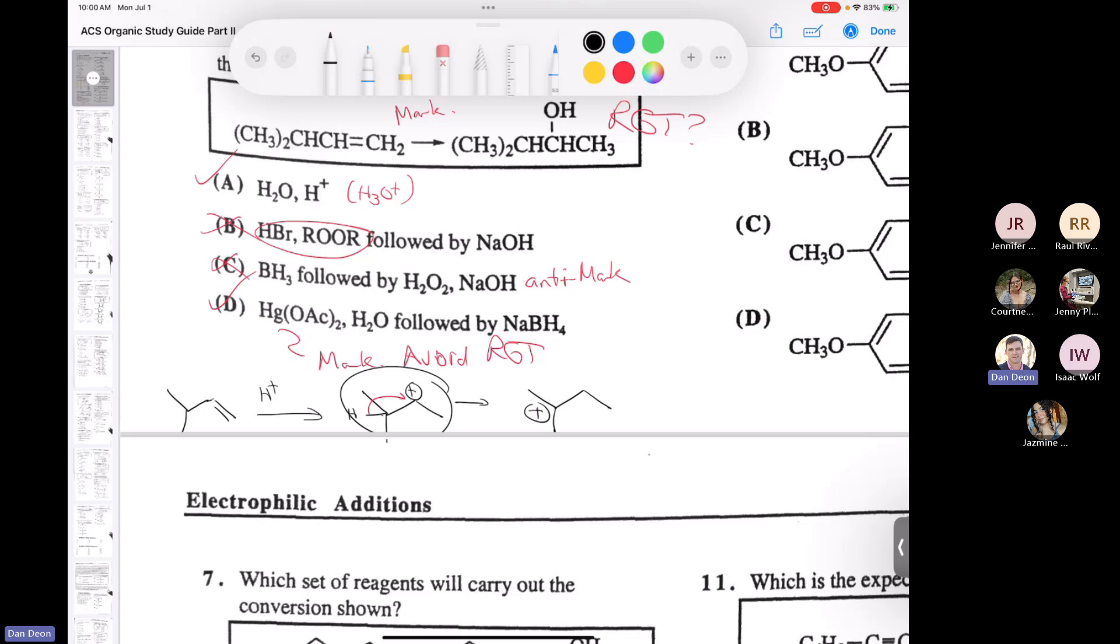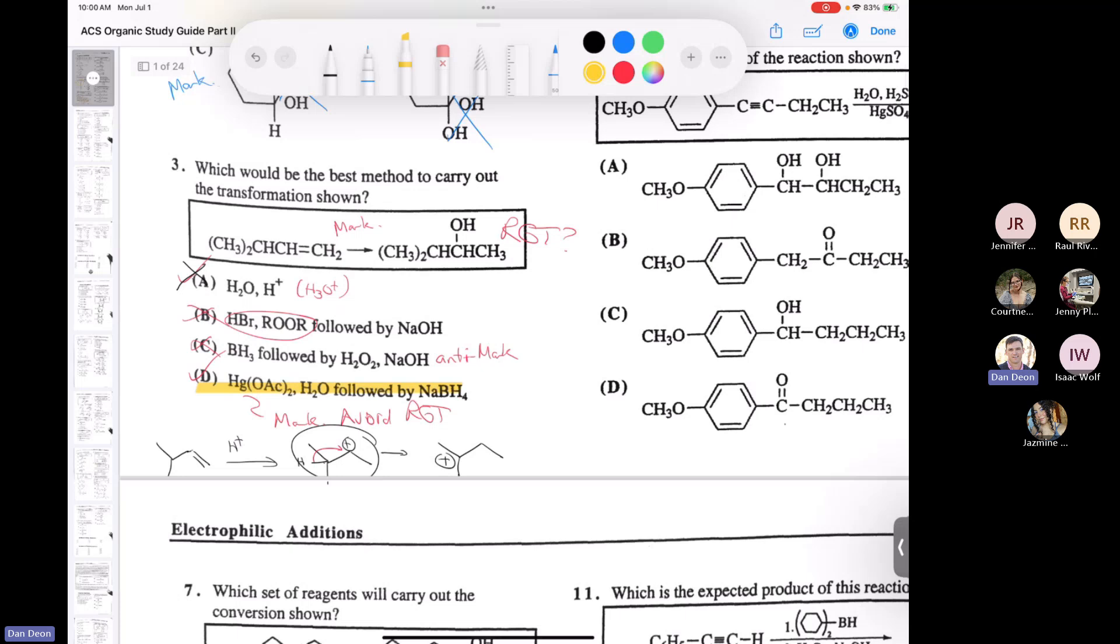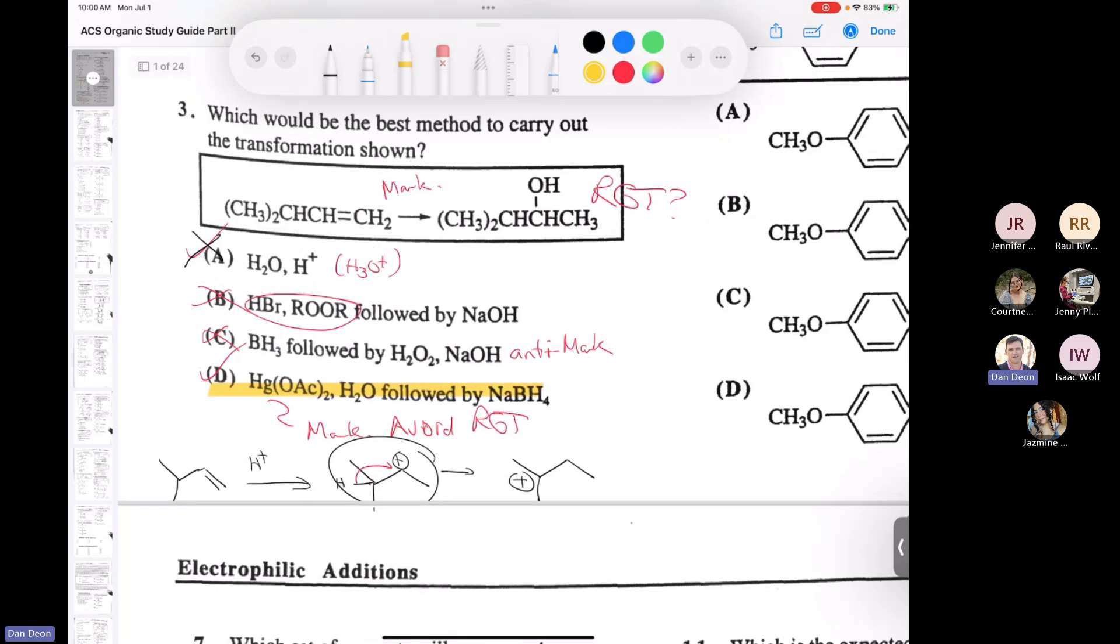It's going to undergo a rearrangement to give us this carbocation. And so we can cross this one off because we need to avoid the carbocation rearrangement. And so if we just want to get a straight Markovnikov addition, we have to use oxymercuration-demercuration. Cool.